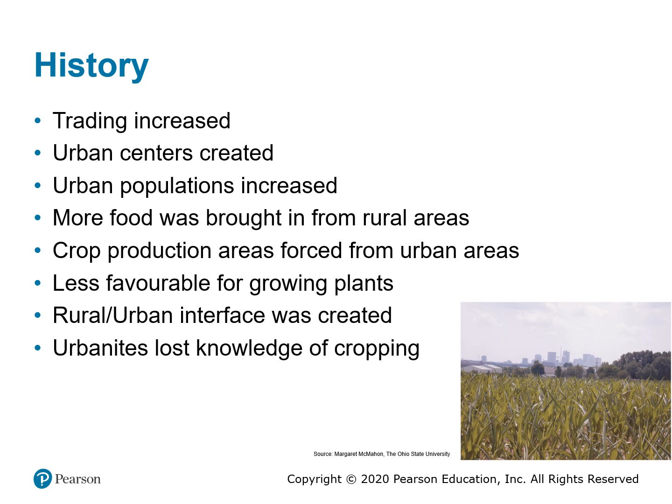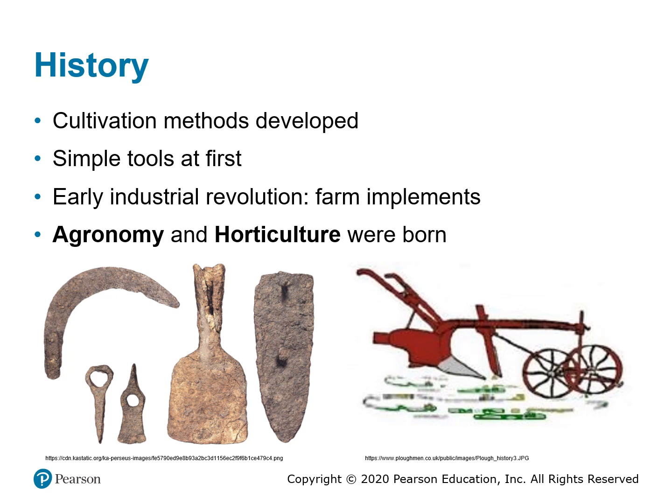Urban growth resulted in what is known as the rural-urban interface, and because of this, urban residents began to lose the knowledge of crop growing. Cultivation methods developed mainly using simple tools at first, but later some of the first products of the early industrial revolution were farm implements, such as mechanized plows, planters, and harvesters. As a result, the science disciplines of agronomy and horticulture were born.